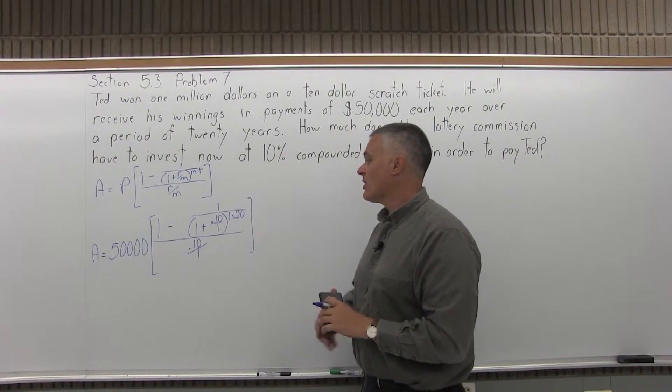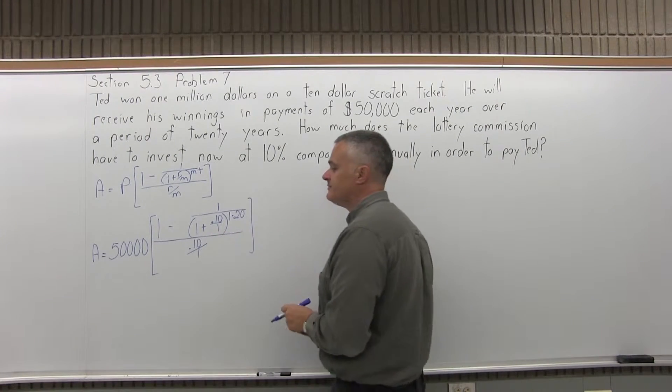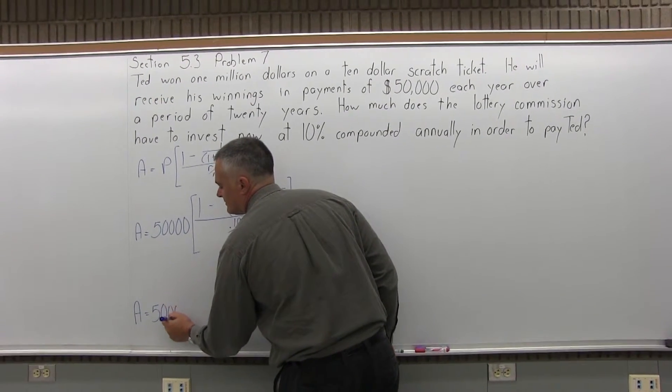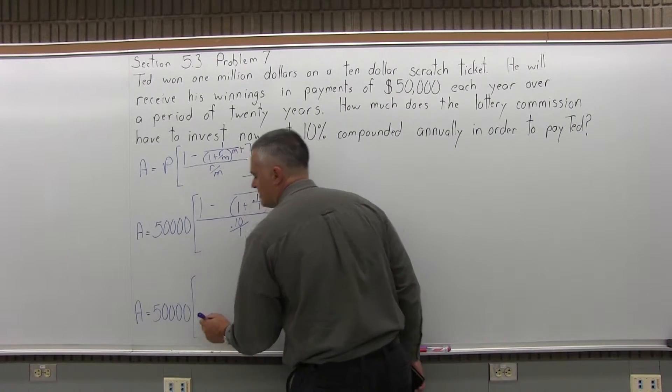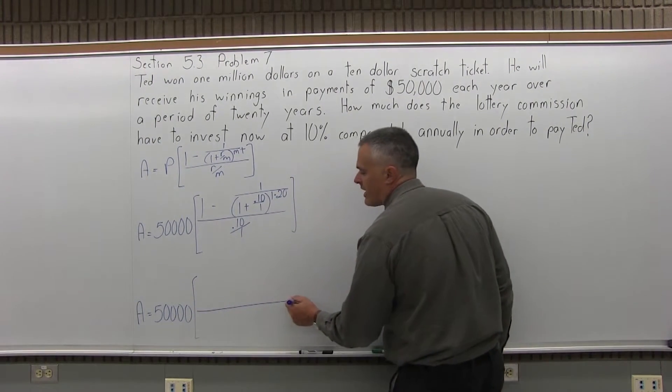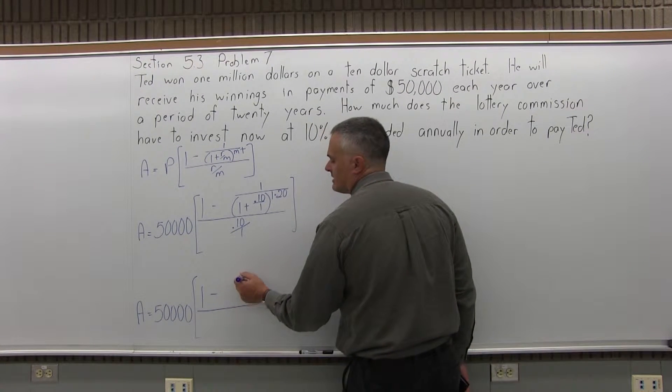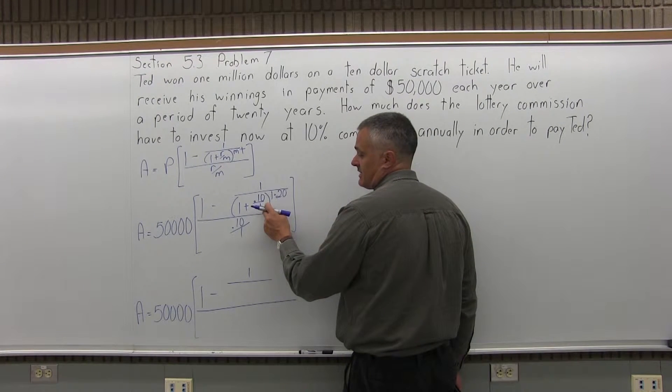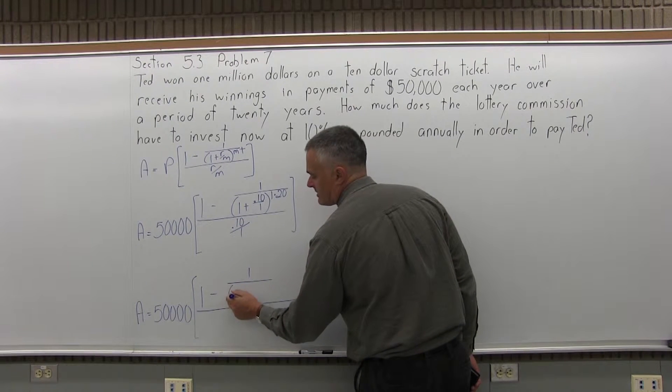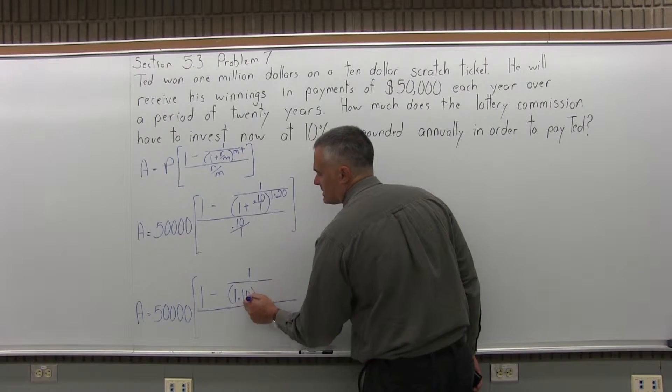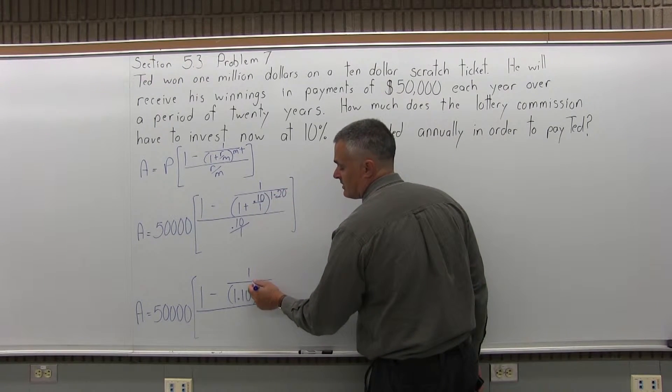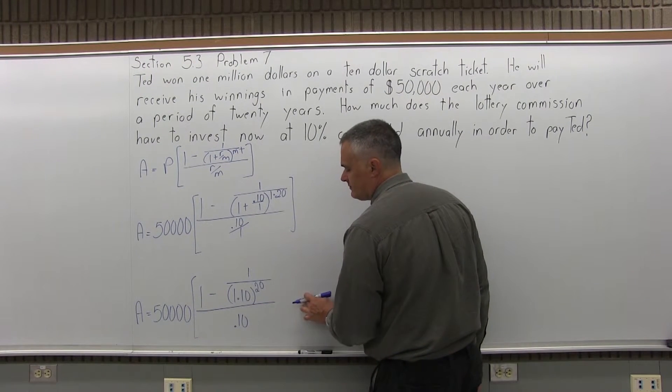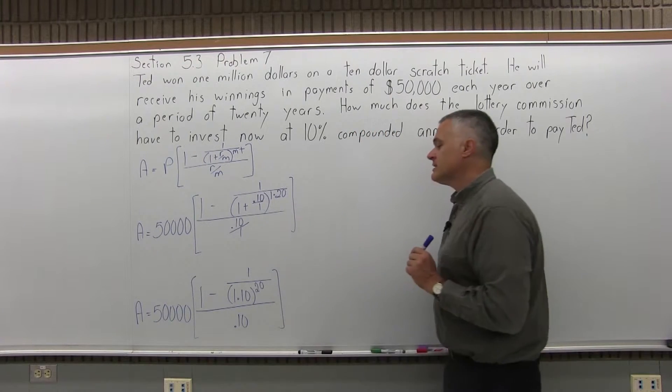Now, let me start working on the work in parentheses. So, I'm going to have A equals 50,000 times some brackets. And in the numerator of the brackets, I will have 1 minus 1 over. So, .10 over 1 just divides the .10. That's easy enough. And you're going to add 1 to it. So, in my parentheses, I have 1.10. Close the parentheses. The exponent 1 times 20 is 20. So, that's not too bad. And then in the denominator, .10 divided by 1 is .10.